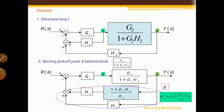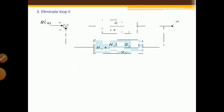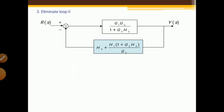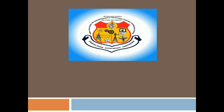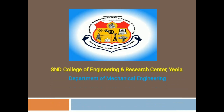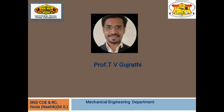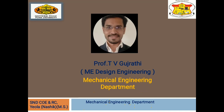Now eliminate loop number 2 using the feedback loop formula. After solving this, we get the final answer: the output divided by input, Y(s)/R(s), is equal to the complete closed-loop transfer function of the system.